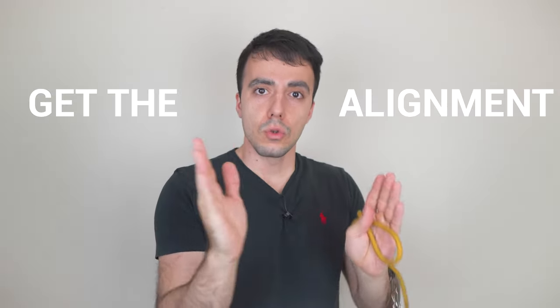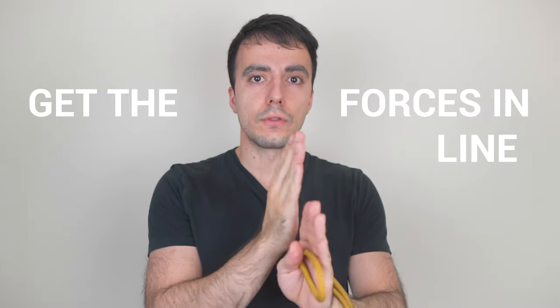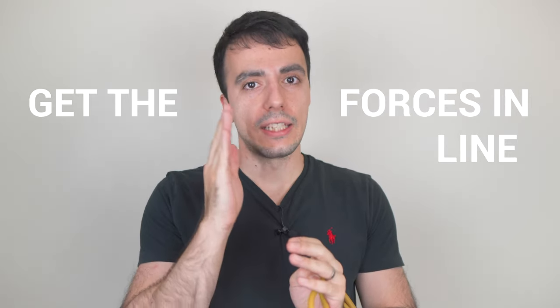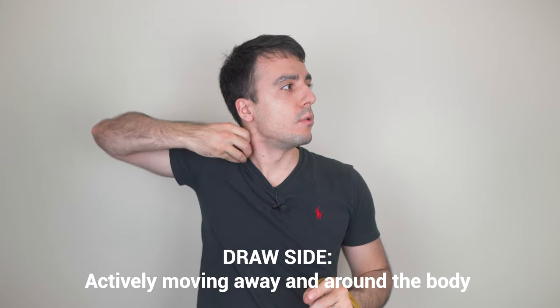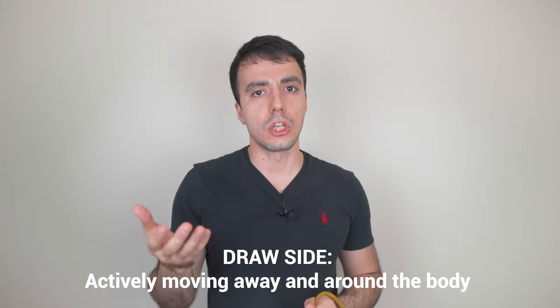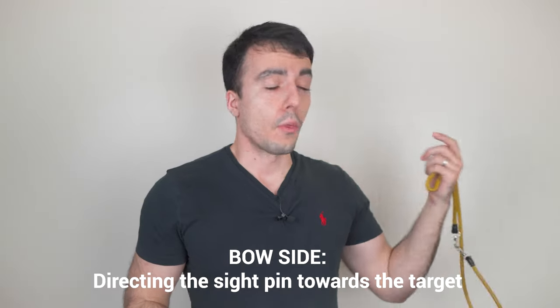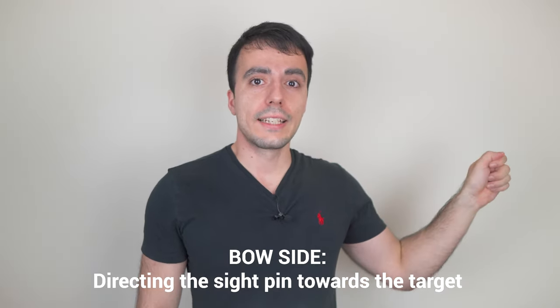It doesn't mean just because you've got into a line you can get to release and just kind of lose the direction. It means you do the work to get the alignment, you get those forces in line, and then the release is still active on both sides. Draw side is actively moving away and around the body, and on the bow side you're actively directing that towards the target.